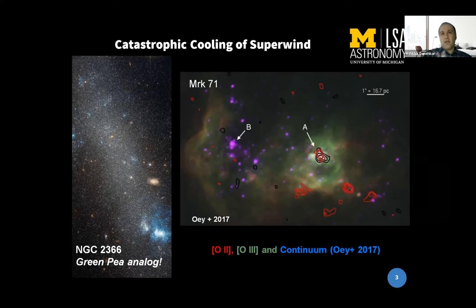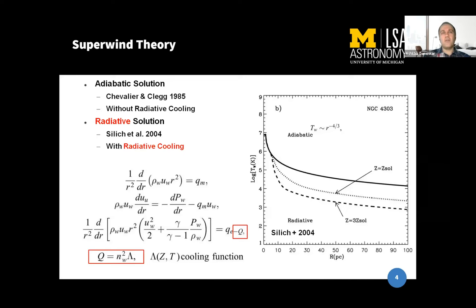In this work, I did hydrodynamic simulations of the superwind and super bubbles. These hydrodynamic simulations are based on the analytical solutions by Chevalier and Clegg, developed in 1985. Later, the radiative solution was developed by Silich in 2004, which included radiative cooling solutions. Here you see the difference between adiabatic and radiative solutions, and you see that higher metallicity contributes to strong cooling in this cooling curve of superwind.